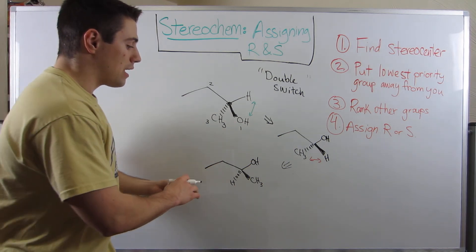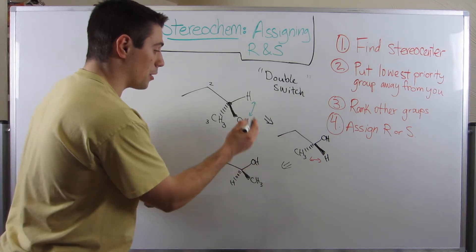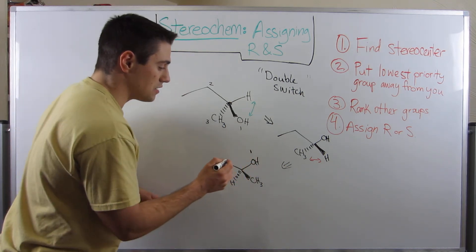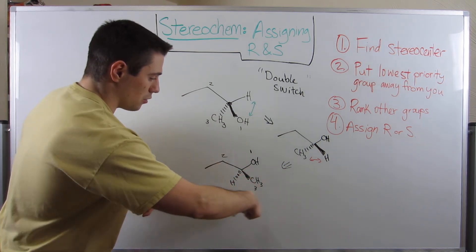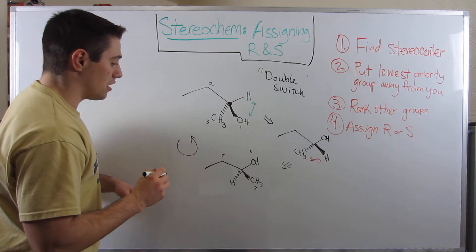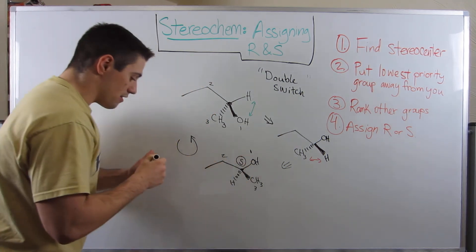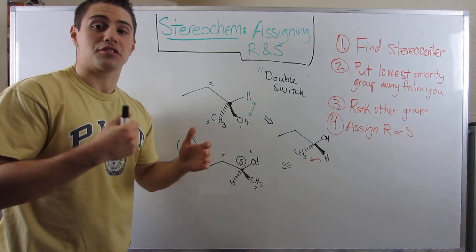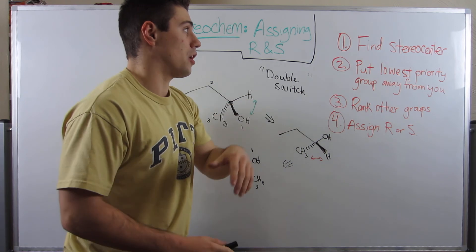Okay. So now we still have our original stereochemistry because we did two switches. And now we have our lowest priority group facing away from us. So now let's keep our priorities. The oxygen was the highest. The ethyl group was number two. And the methyl was three. So if we go like this, looks like this type of scenario. And we know that's S. And sure enough, that is the stereocenters configuration.